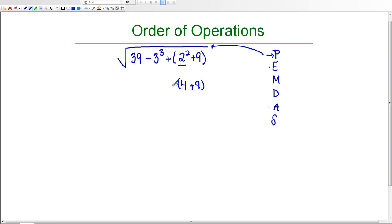I'm going to bring everything else down, including the radical. And now, underneath the radical, I still haven't gotten rid of those parentheses, so I need to work on that. 4 plus 9 is 13. And again, I'm bringing everything else down. And that just helps you to make sure you don't make any mistakes.